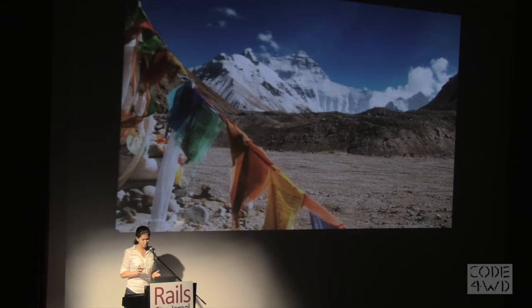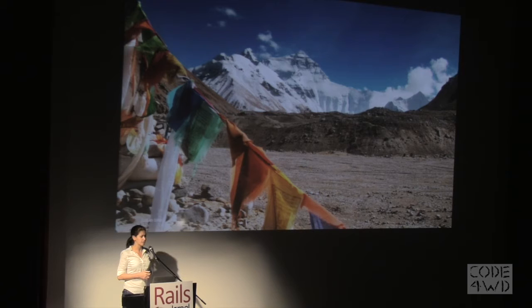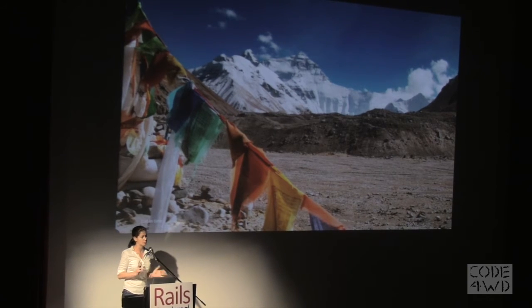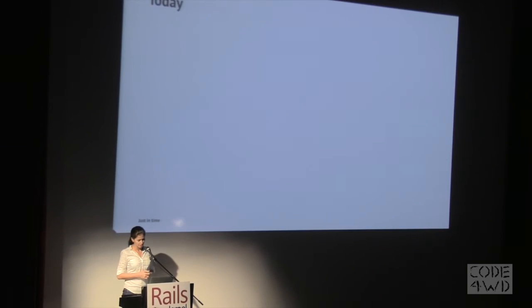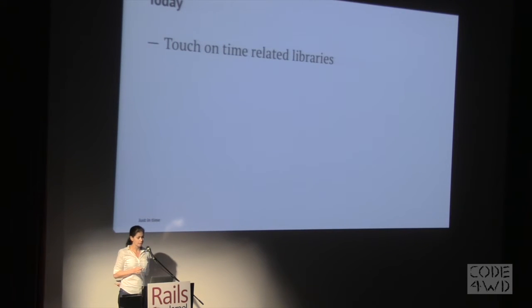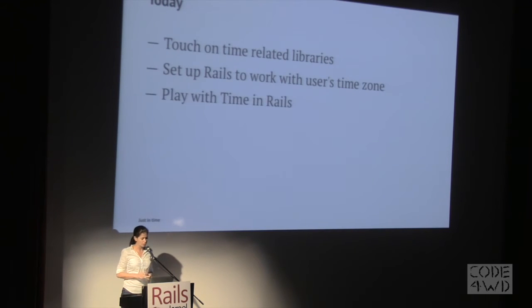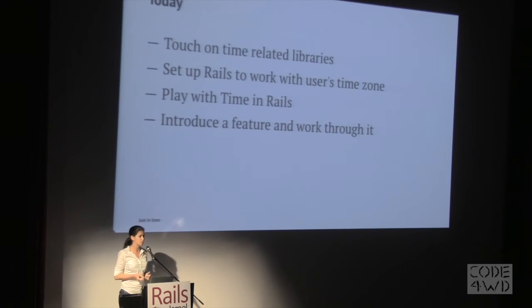So there are a lot of places with really different time zones. I think there are about 70 countries or places that change their time zones every year. Today I'm going to talk about time-related libraries, set up Rails to work with user time zones — custom ones — play with time in Rails, and then work through a feature in time zones.